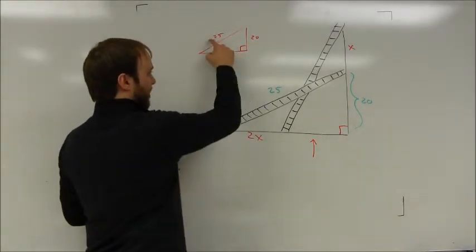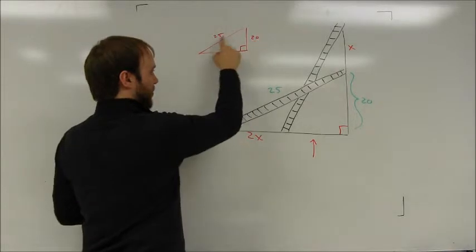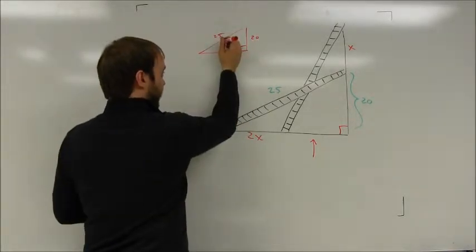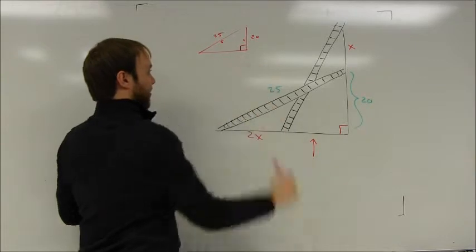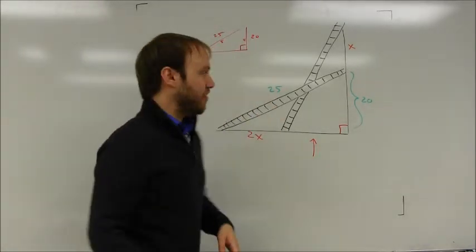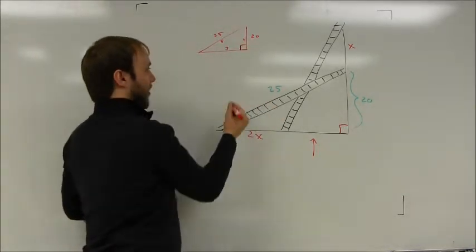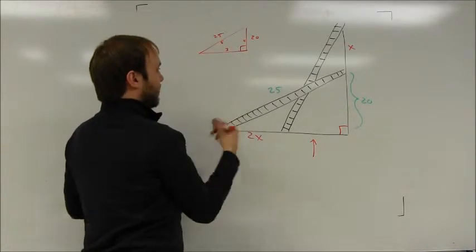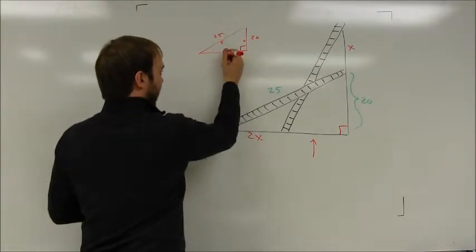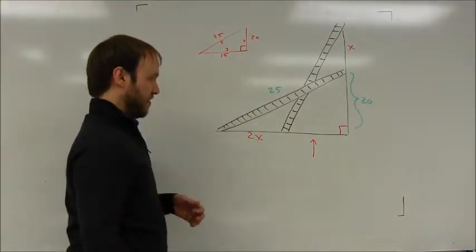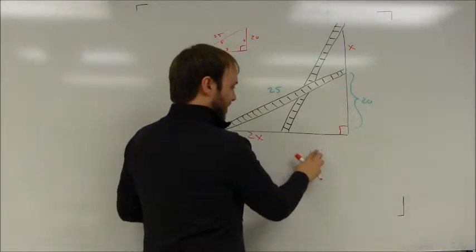I could use the Pythagorean theorem here, but I noticed that these are divisible by 5. 25 divided by 5 is 5, 20 divided by 5 is 4. This is a little 3-4-5 right triangle. It's a little 3-4-5 triangle that's been multiplied by 5. And so that means that that missing side is going to be 15. So I know that this entire side down here at the bottom is 15 units.